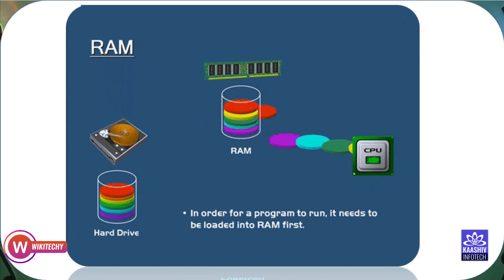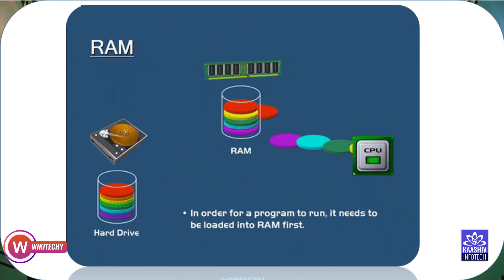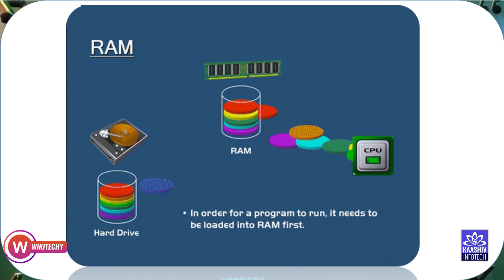This is a random access memory. So I have data. If you have a RAM, you can get a process. This is a normal process.